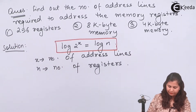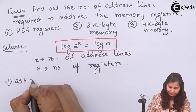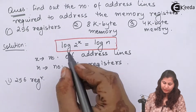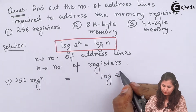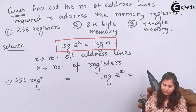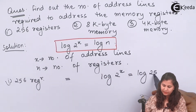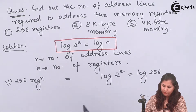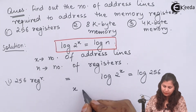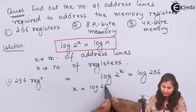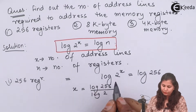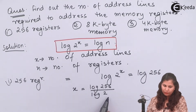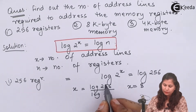Let's take the first part: 256 registers. Putting in the formula, log(2^x) = log(n), where x is the number of address lines. So we have x = log(256) / log(2). This equals log(2^8) / log(2), so x equals 8 because 256 is 2 to the power 8.